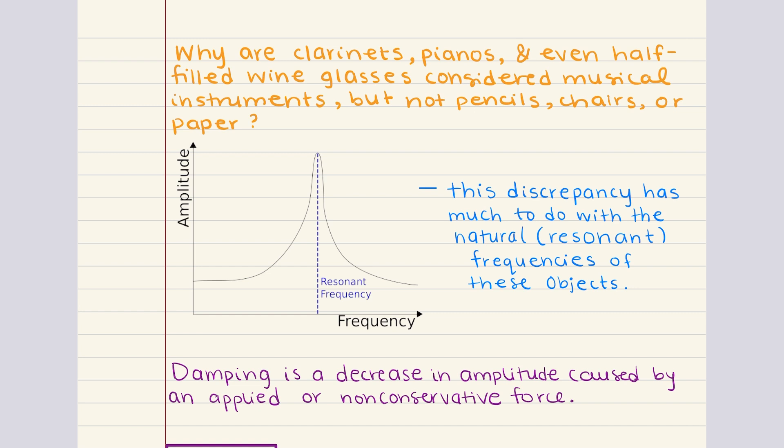But in real systems, this growth doesn't continue indefinitely. Damping caused by friction, air resistance, or internal material constraints gradually reduces the amplitude, preventing uncontrolled vibration. And this is good because without damping, oscillating objects like bridges, buildings, or instruments could vibrate uncontrollably. And this balance between resonance and damping is very much essential for stability.